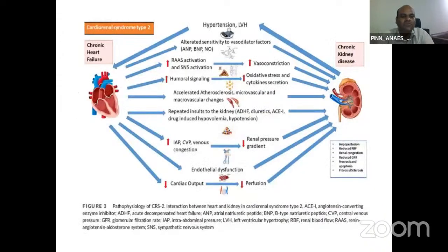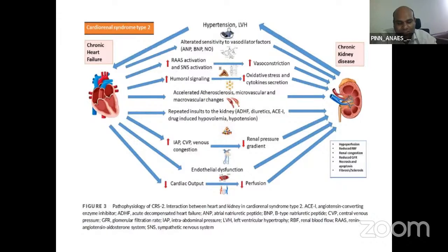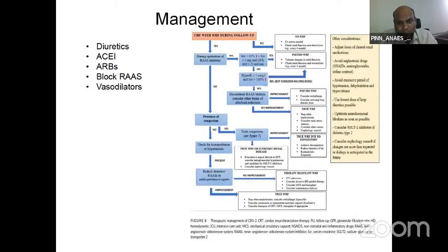In type 2 cardiorenal syndrome, chronic heart failure leads to further worsening of chronic kidney disease. Chronic congestive cardiac failure causes decreased renal perfusion, increased chronic renal venous congestion, increased renal vascular resistance, and ultimately chronic renal failure, along with atherosclerotic changes over time. Management includes diuretics, blocking the angiotensin system, and vasodilators.